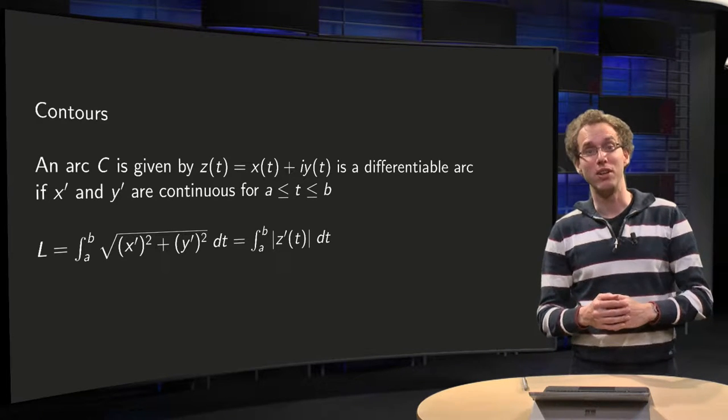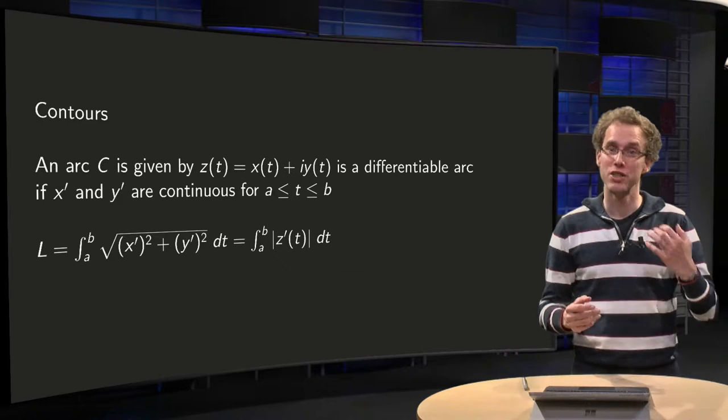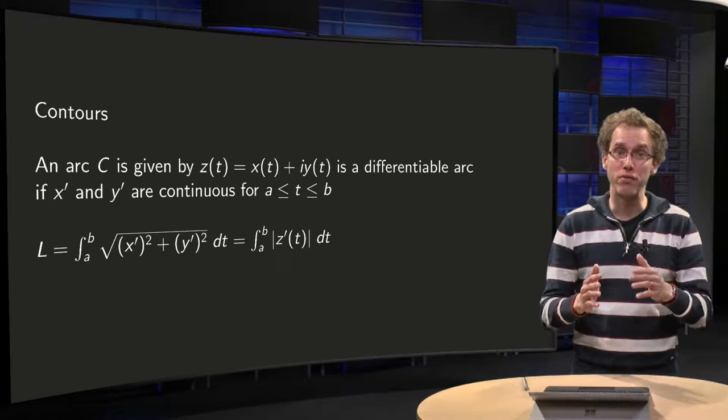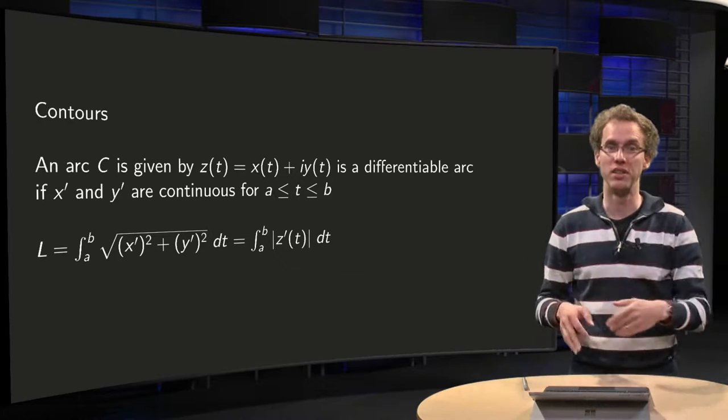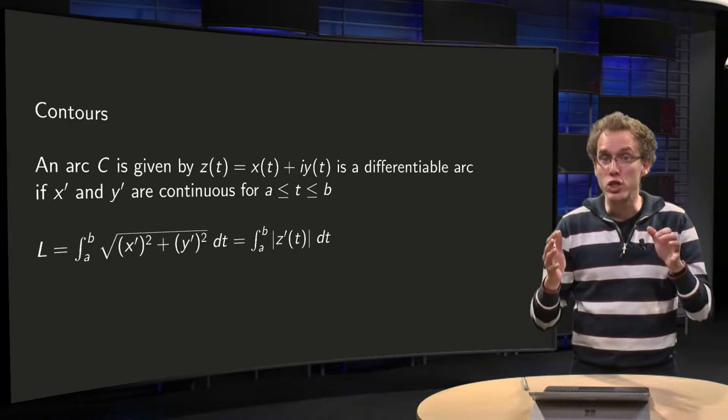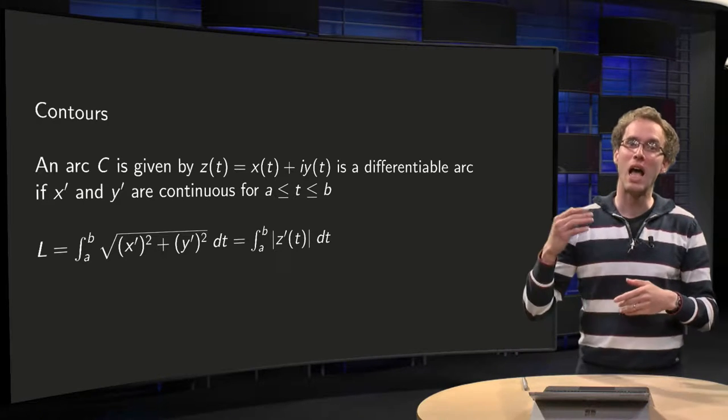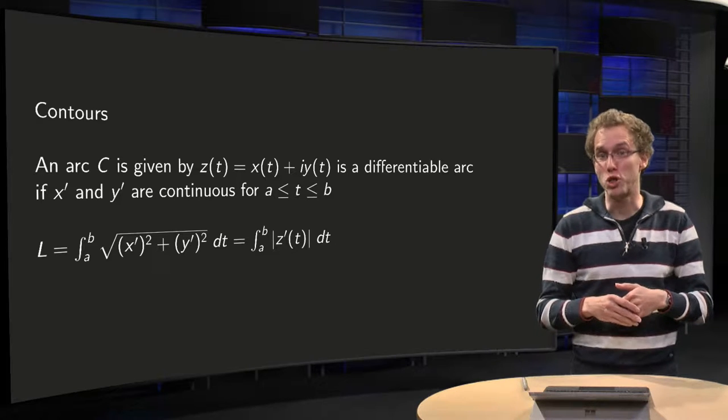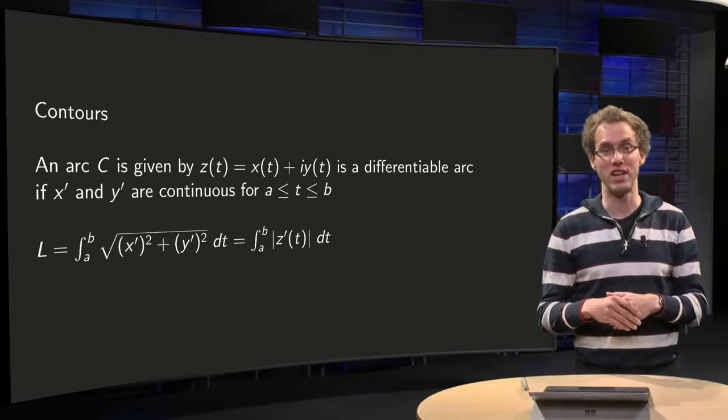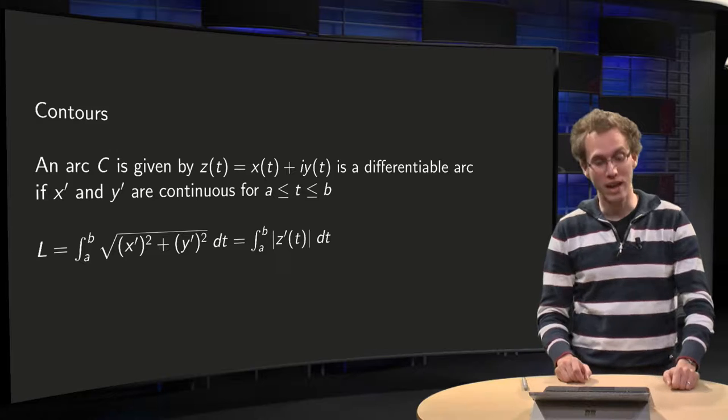Our complex integrals will be taken along so-called contours, simple closed arcs with only a few sudden changes of direction. But what does it mean, a sudden change of direction? And how can we see whether we have such a contour? So what is a contour precisely? Well, that's what you will learn in this video.